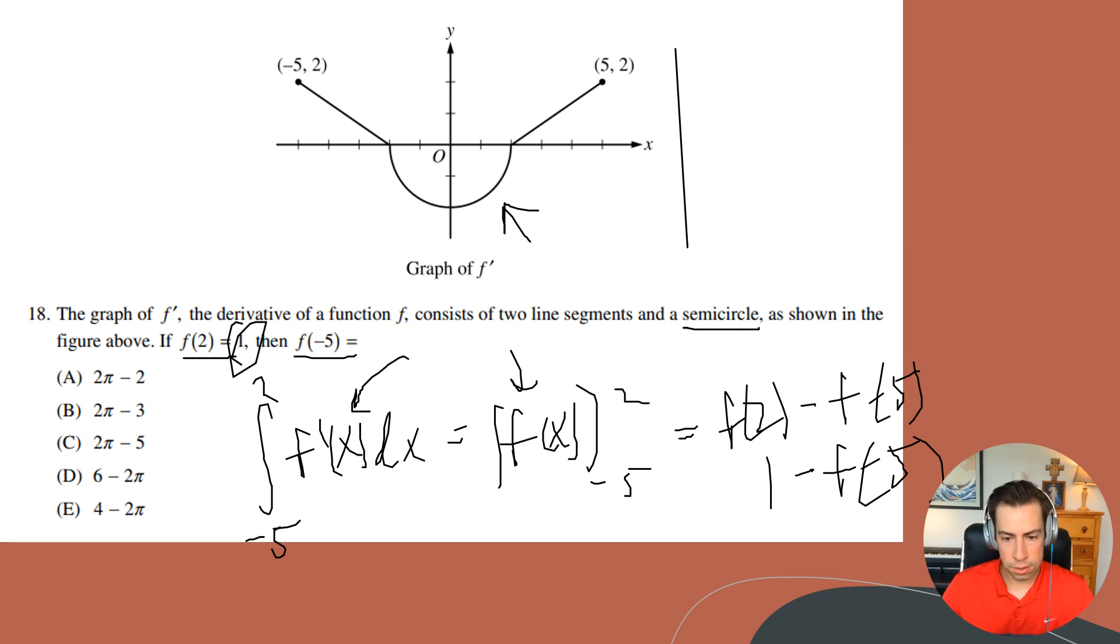here is that there's no way for us to really know what is f of negative five just by looking at it, right? So what I'm going to have to do here is use the fact